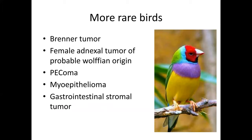There are a few more rare entities to consider: Brenner tumor can occasionally occur in the vagina; PEComas have a dedicated video; and myoepithelioma and gastrointestinal stromal tumor are also remarkably rare vaginal primaries. If you're lucky enough to see one, hopefully you will have thought about it.